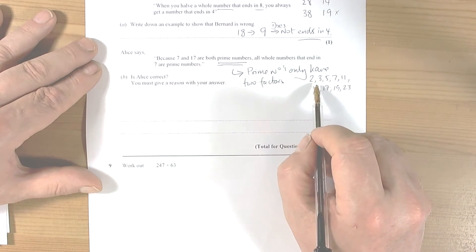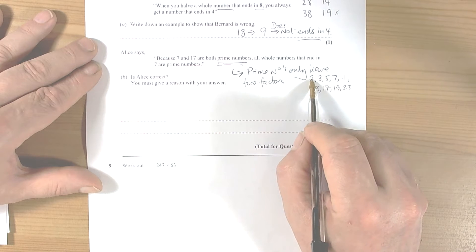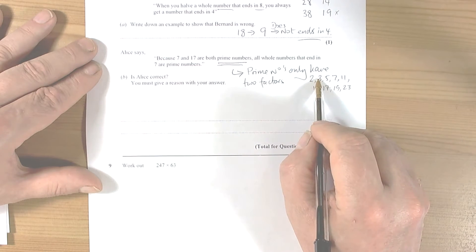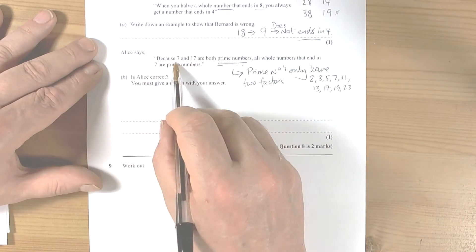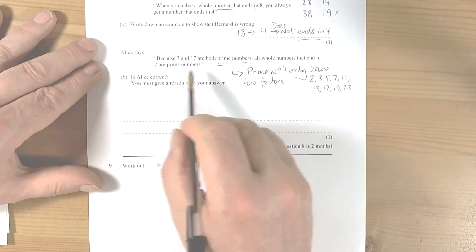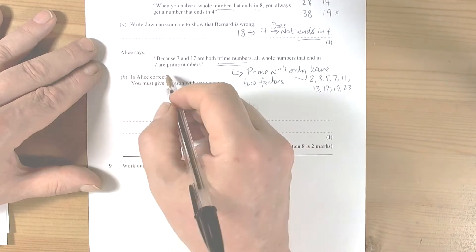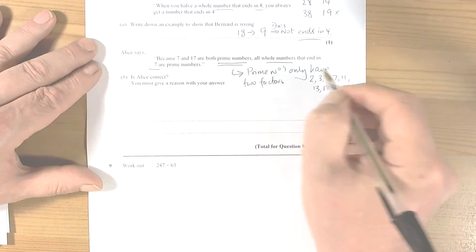So you need to make sure you do understand that prime numbers only have two factors. Two has the factors one and two, three has the factors one and three, five has the factors one and five, and so forth. So she says all whole numbers that end in seven are prime numbers.